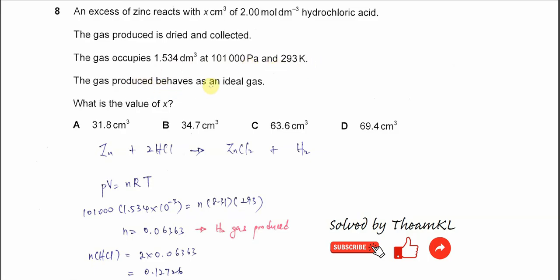The gas produced behaves as an ideal gas. So from this information, we know that the combined gas law can be used. So PV equal to nRT.